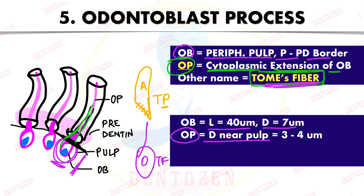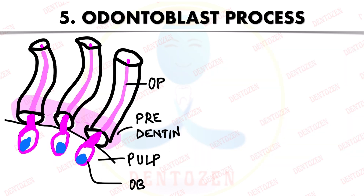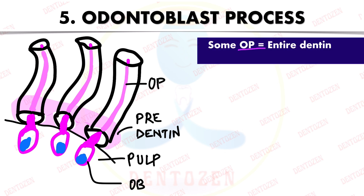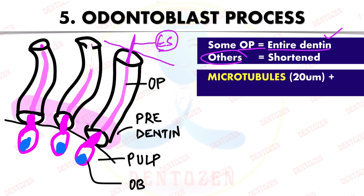The odontoblast cell length is 40 micrometers and diameter is 7 micrometers. The odontoblastic process diameter near the pulp is about 3 to 4 micrometers, whereas into dentine it is 1 micrometer — reducing as it goes inside. These processes do not extend to the entire thickness of dentine in all regions; in some areas it may be shortened due to mineral deposition. Where it goes to the entire thickness, it can even cross the dentino-enamel junction into the enamel, where it is known as an enamel spindle.